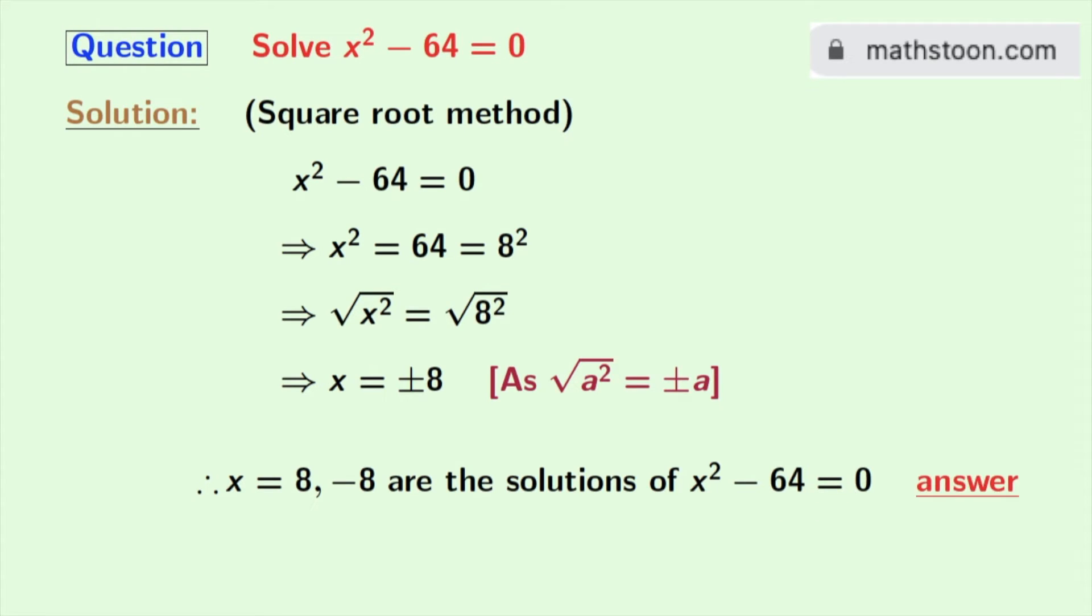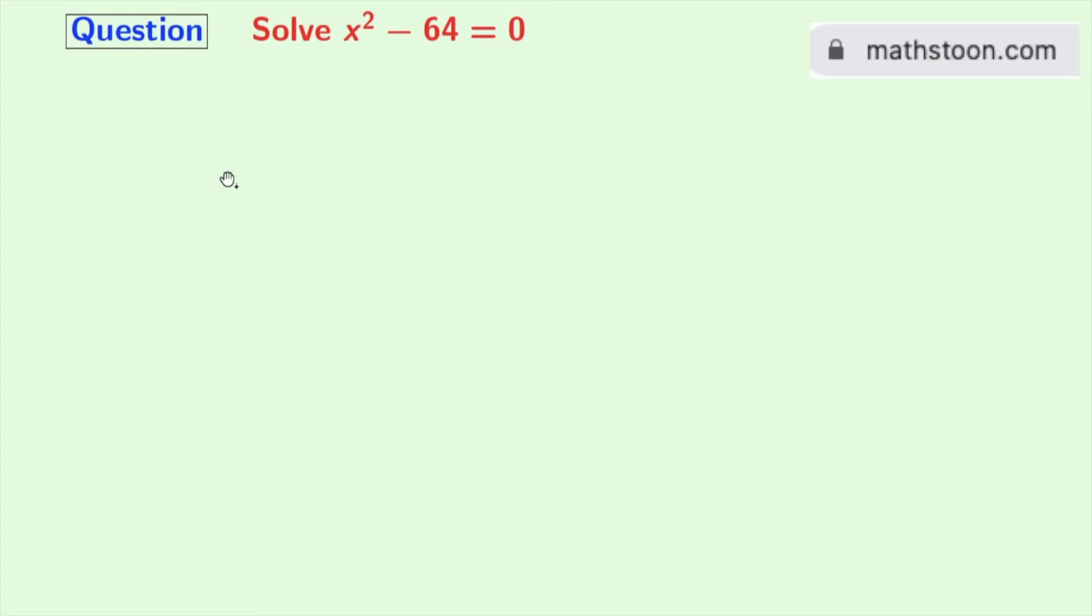Now we will solve this equation using another method. That method is the factorization method. This is our given equation. As we know that 64 is 8 squared, so we can rewrite this expression as x² minus 8² is equal to 0.